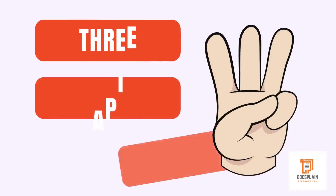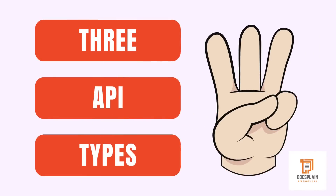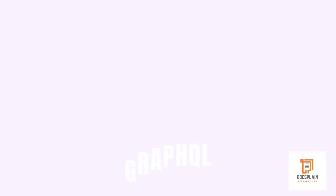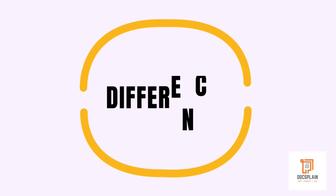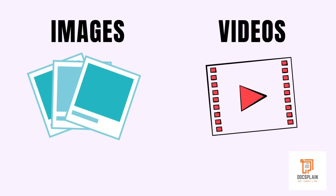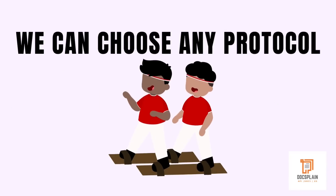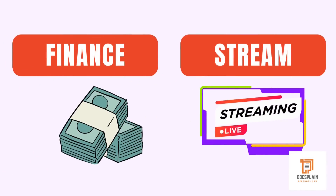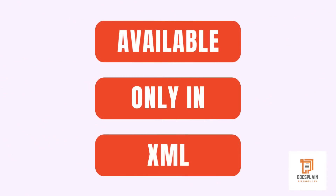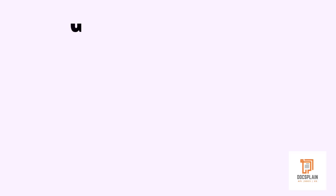You might end up working on one of the three APIs: SOAP, REST, or GraphQL. A SOAP API is more convenient for binary data such as images or videos and is independent of network protocol. You would find them mostly used in financial institutions or streaming services, and they are written in XML format.